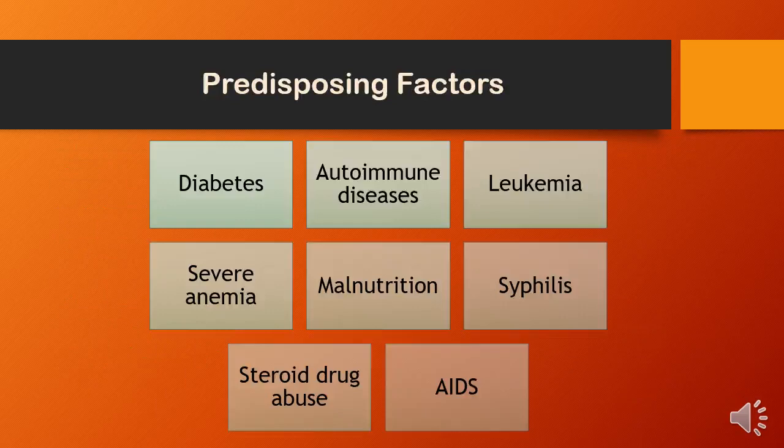Predisposing factors for osteomyelitis include diabetes, autoimmune diseases, leukemia, severe anemia, malnutrition, syphilis, steroid drug abuse, and AIDS.